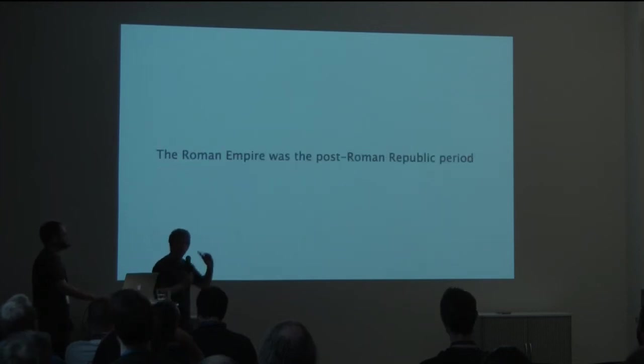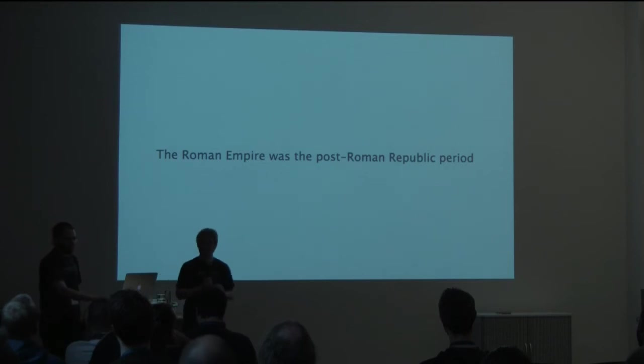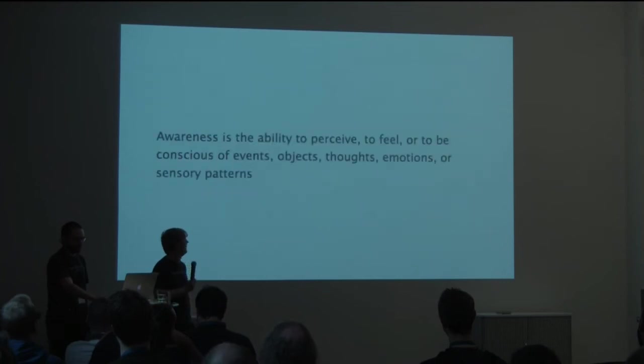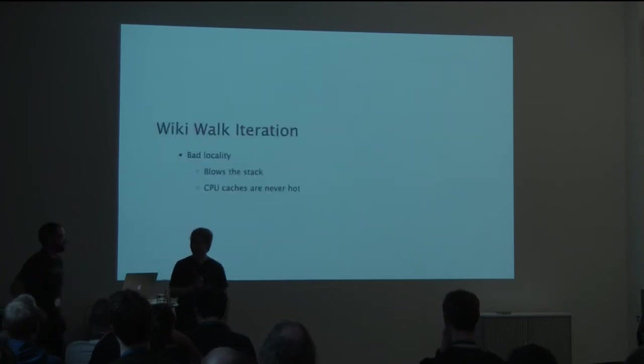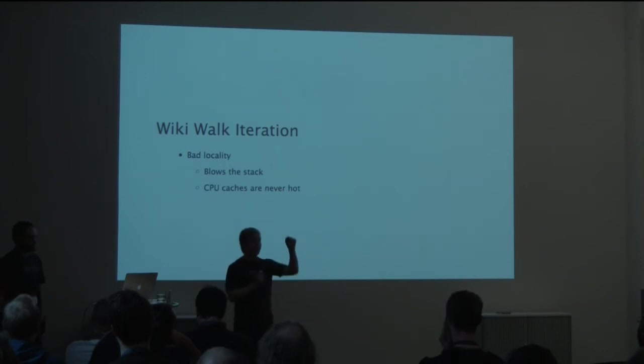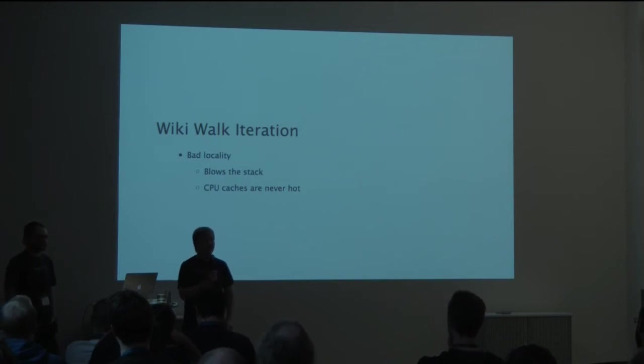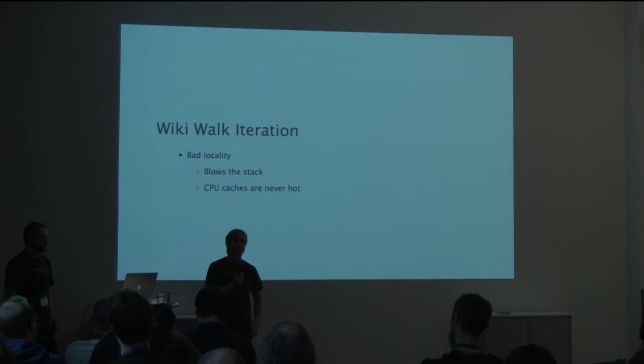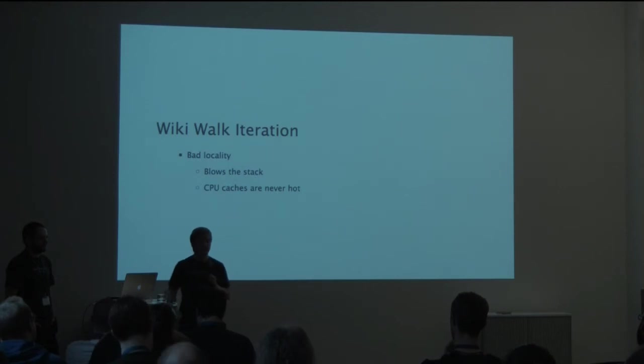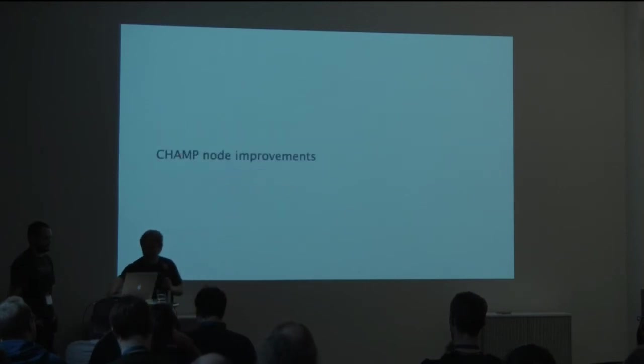So if we scroll back, we can see that the next word after Roman Republic was 'period.' And this is demonstrating through human computers that WikiWalks are not very good at maintaining locality. That because we have to keep on going, traversing the tree going up and down, up and down, that our locality is basically shot when we're doing iteration, that our CPUs would guess that we're going to be doing things very close in space and time. That is, that our cache misses are just shot and just make it for much slower than it needs to be. So, how does CHAMP improve this? Well, it does it through improving the nodes.